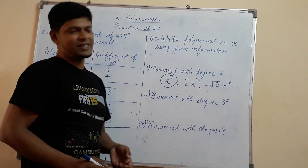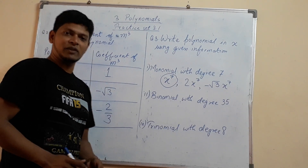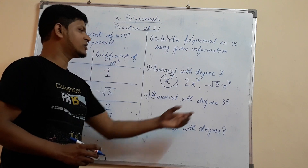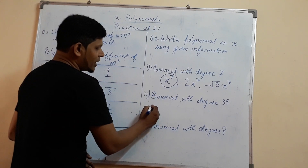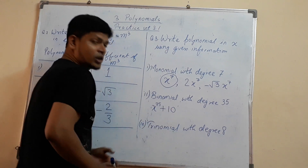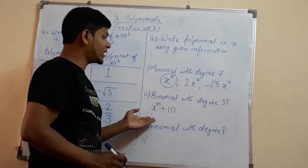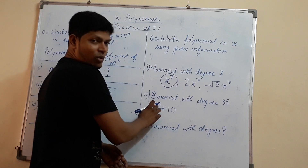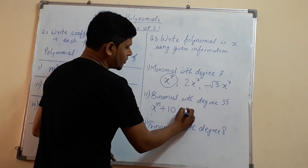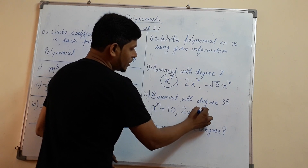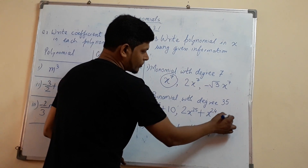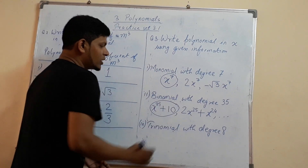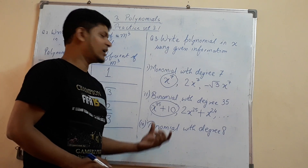Then a binomial with degree 35. Degree 35 means the maximum power of the variable is 35. We can write x raised to 35 plus 10. This becomes a binomial because there are 2 terms, and the maximum power of the variable is 35. There can be various answers, for example 2x raised to 35 plus x raised to 24, and so on. We take the simple one: x raised to 35 plus 10, which is a binomial with degree 35.